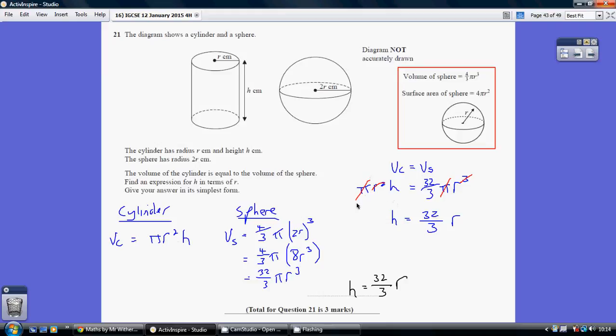Now you can cancel a pi from both sides. It's effectively dividing both by pi. And you can also cancel an R squared from both sides. So that leaves us with... excuse me, that leaves us with H equals 32 over 3 times the one remaining R.